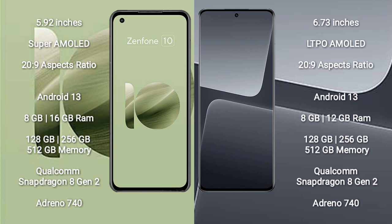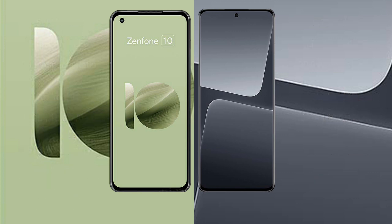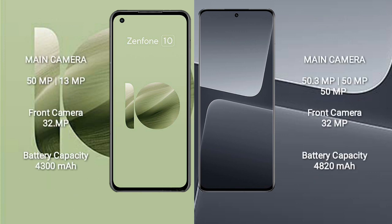Xiaomi 13 Pro comes with 8GB or 12GB RAM and 128GB, 256GB, or 512GB internal storage, with a Qualcomm Snapdragon 8 Gen 2 processor and GPU Adreno 740. Asus Zenfone 10 has a rear dual-camera setup of 50MP plus 13MP and a front camera of 32MP. Xiaomi 13 Pro has a rear triple-camera setup of 50.3MP plus 50MP plus 50MP and a front camera of 32MP.